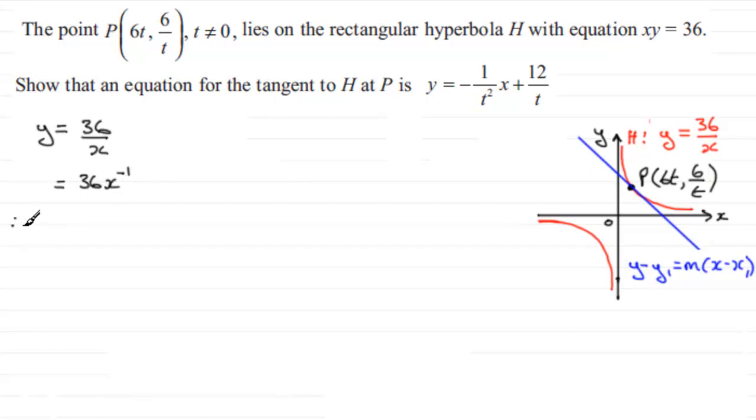When differentiating with respect to x, we have dy/dx equals minus 36x to the power minus 2. We can rewrite x to the power minus 2 as 1 over x squared, giving us minus 36 over x squared.